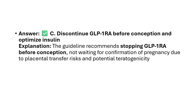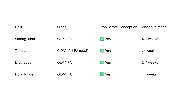The guidelines recommend stopping GLP-1 receptor agonists well before conception — not waiting for confirmation of pregnancy — because of the risk of placental transfer and potential teratogenicity. The recommended washout periods are: semaglutide at least 4 to 8 weeks before trying to conceive; tirzepatide at least 4 weeks or more; and liraglutide and dulaglutide approximately 4 weeks. All these agents are recommended to be stopped before trying to conceive.